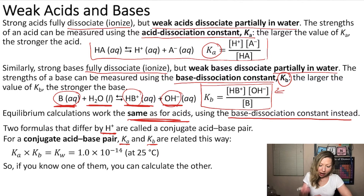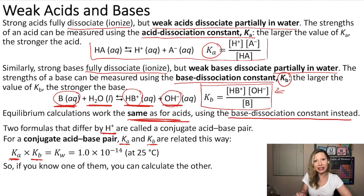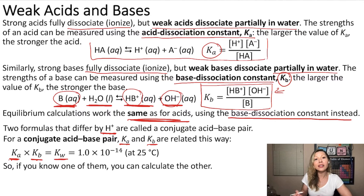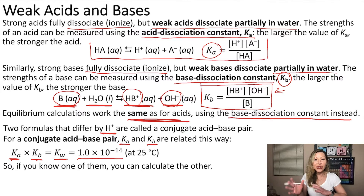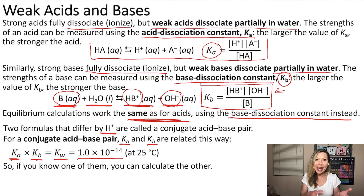If you multiply the acid dissociation constant by the base dissociation constant, that is going to equal the ion product constant of water, K sub W, which is a constant value. So if you know one of them, you can calculate the other — if you know K sub A, you can calculate K sub B.